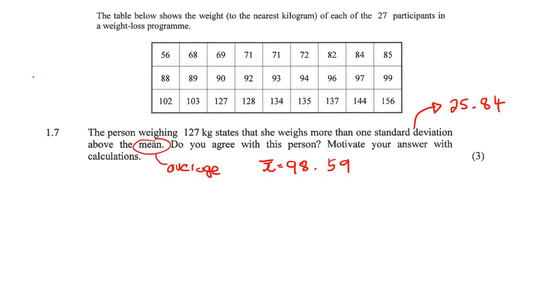So this person says that she is more than one standard deviation above the mean. So what we do is we know that the mean is 98.59. So if we add one standard deviation on to that, how much do we get? 124.43. Now this girl is 127. Yes, so she is more than one standard deviation above the mean. So do you agree with this person? Yes, we do agree with this person. And then you would have showed all of your calculations like that.